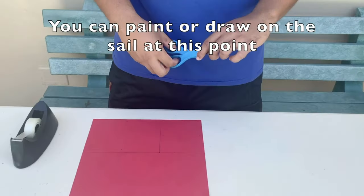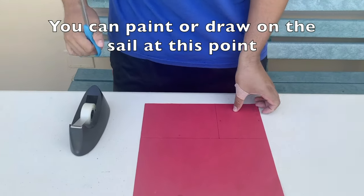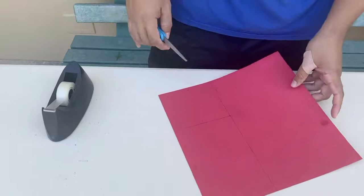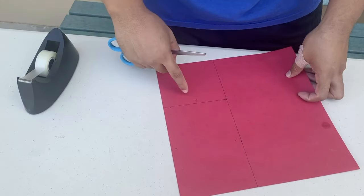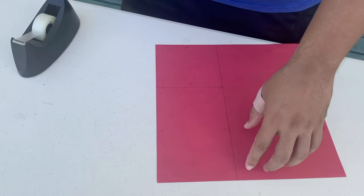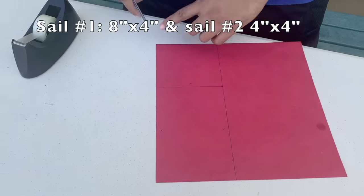Okay, so we're going to go to our construction paper. I outlined the sails. I made one larger than the other, so this here will be eight inches by four inches.